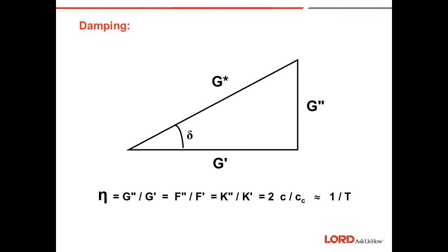Dynamic shear modulus G* can be described as a complex number with an elastic shear modulus G-prime component, a damping shear modulus G-double-prime component, and a phase angle. The ratio of the damping modulus to the elastic modulus, or tan delta, is also called the loss factor. The transmissibility of the rubber spring at resonance is approximately equal to the inverse of the loss factor.